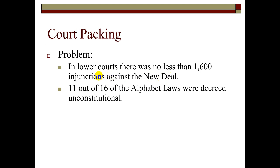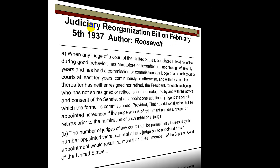Eleven out of the 16 alphabet laws were declared unconstitutional. FDR was running into a roadblock — he couldn't go forward with his hopes because almost all of his legislation was being declared unconstitutional.